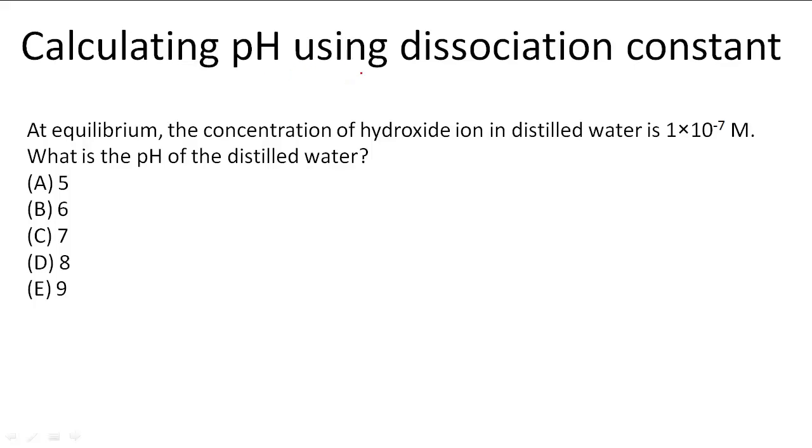Calculating pH using dissociation constant. In this problem, at equilibrium the concentration of hydroxide ion in distilled water is 1.0 times 10 to the negative 7th molar.